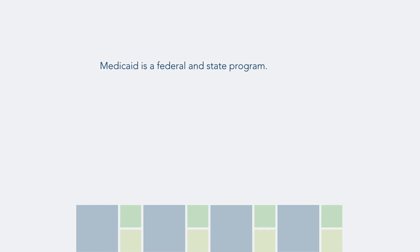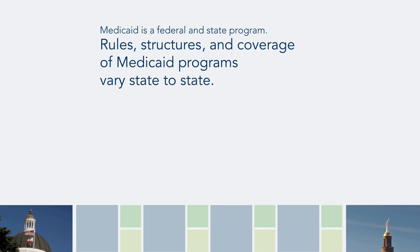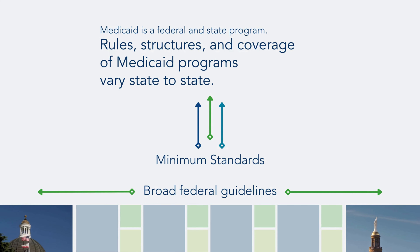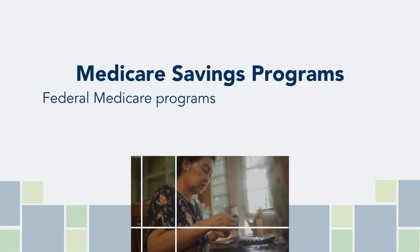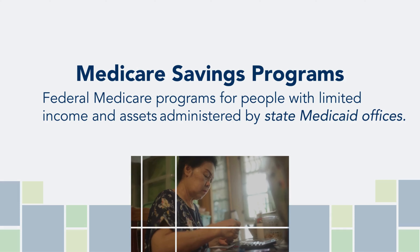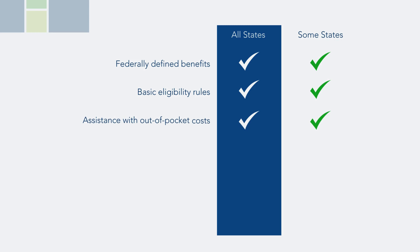Because Medicaid is a federal and state program, some of the rules, structures, and coverage of Medicaid programs vary from state to state. The federal government sets broad guidelines and minimum standards for Medicaid, but states have significant flexibility. Medicare savings programs are federal Medicare programs for people with limited income and assets that are administered by state Medicaid offices. Medicare savings programs have federally defined benefits and basic eligibility rules, and in every state they provide financial assistance for Medicare out-of-pocket costs, but states can establish more generous income and asset limits.